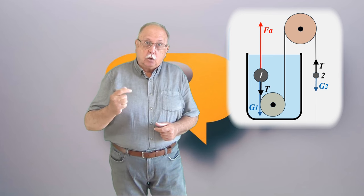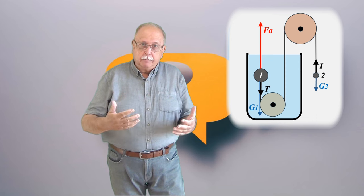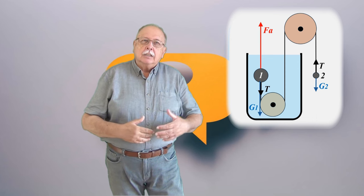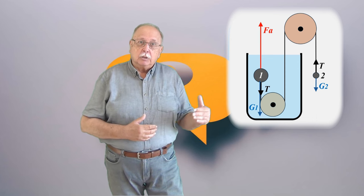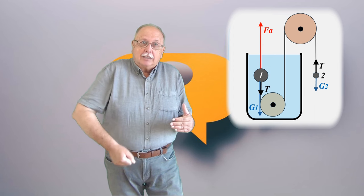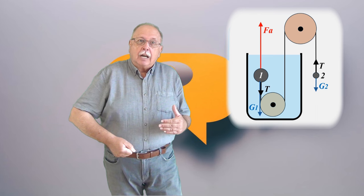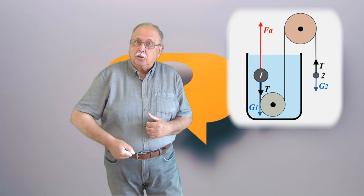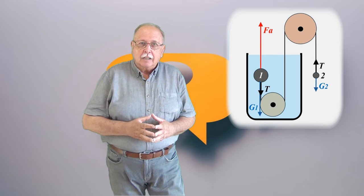2. Dacă înlocuim bila 1 cu una mai mare, crește diferența dintre forța arhimedică și greutatea bilei 1. Adică bila 1 va trage mai tare de firul care o leagă de bila 2. Știm acest lucru și din experiență.